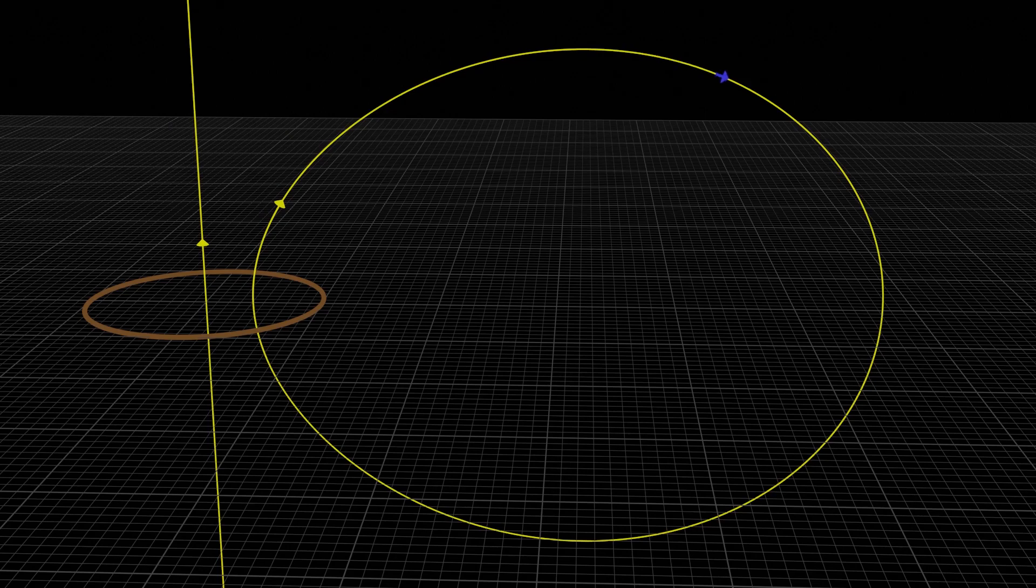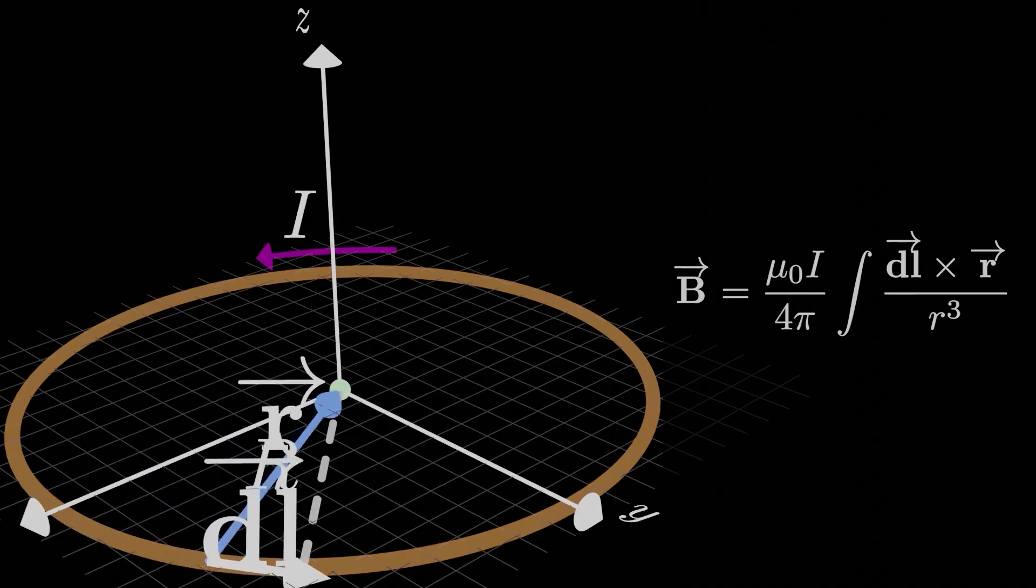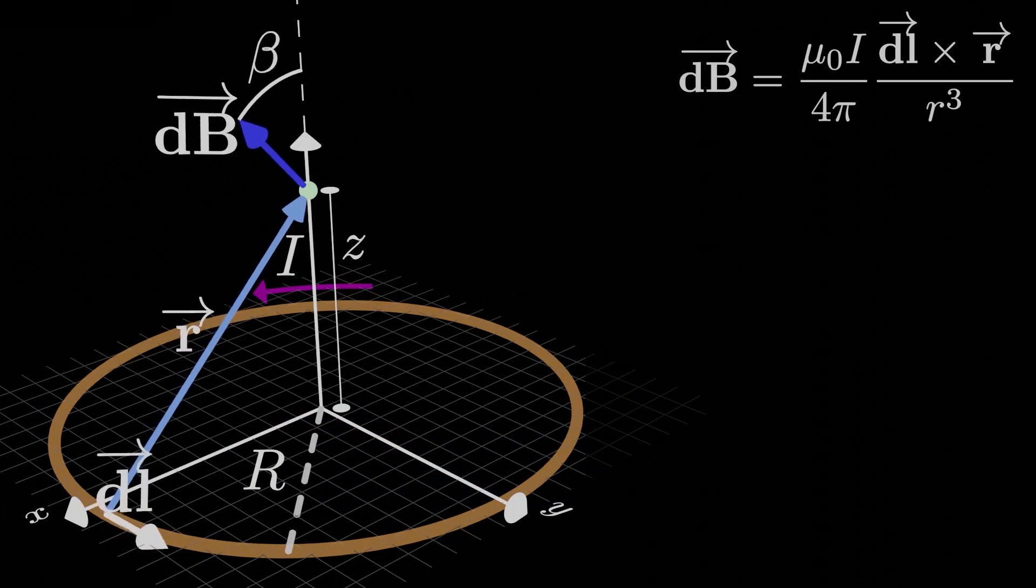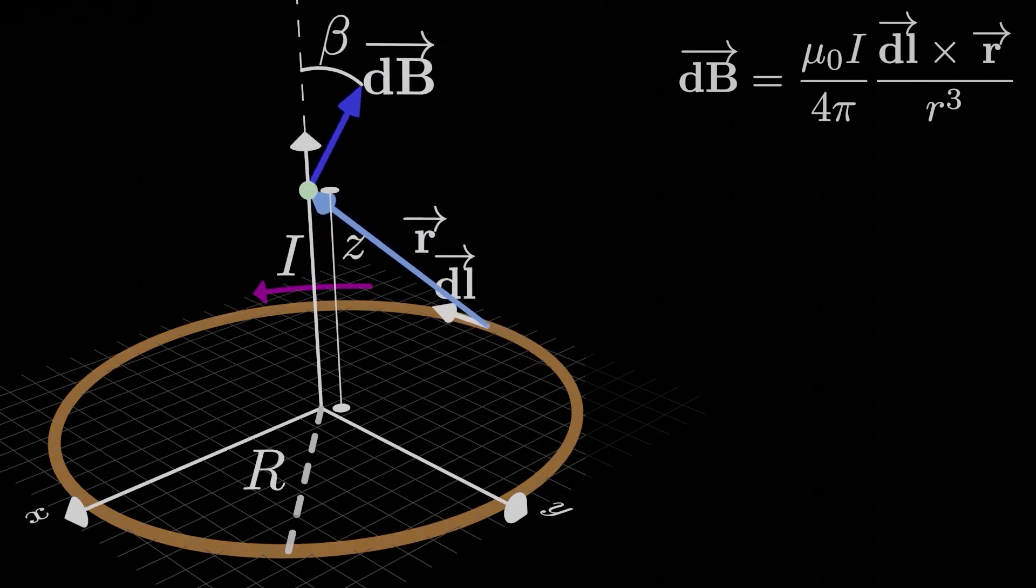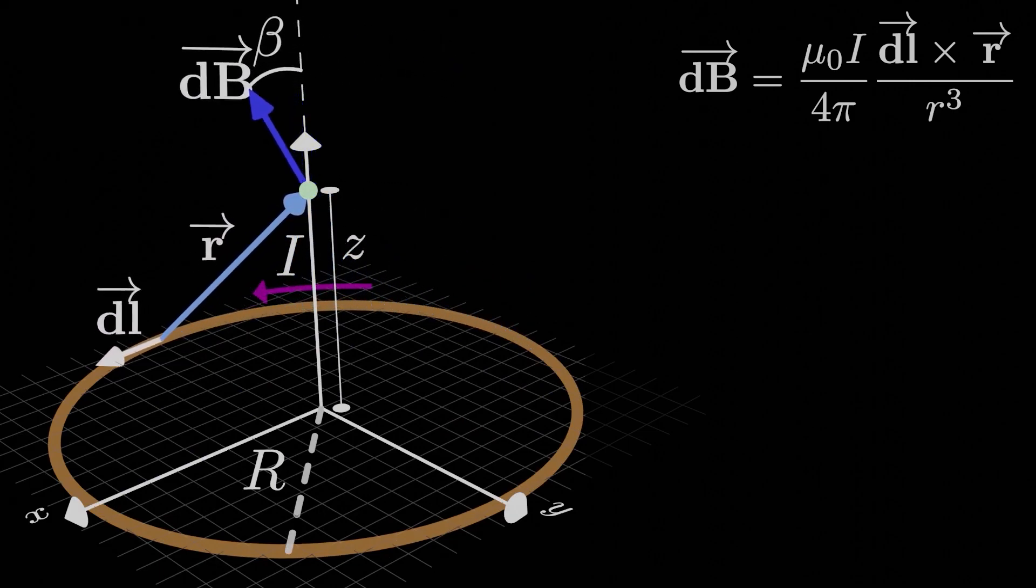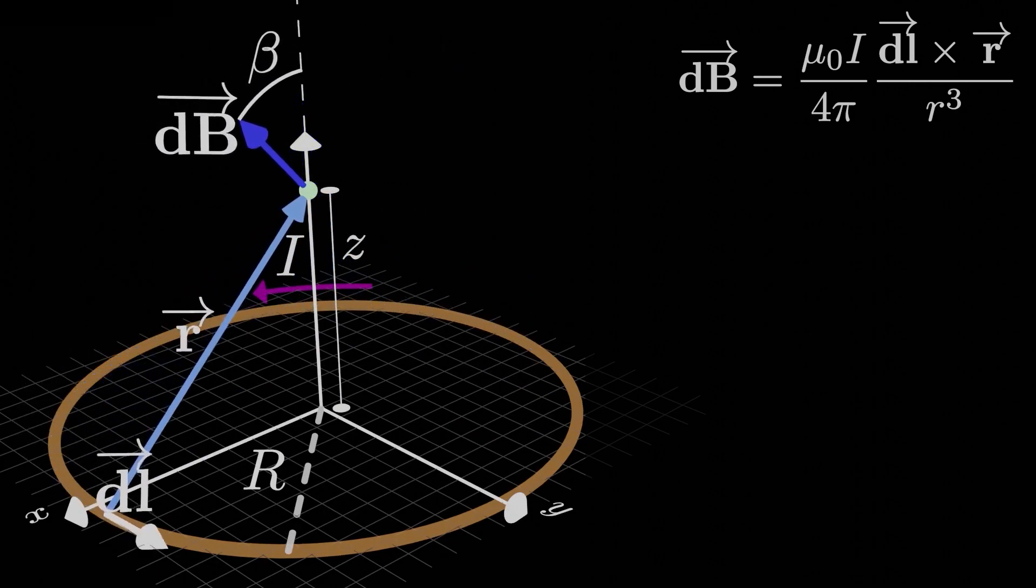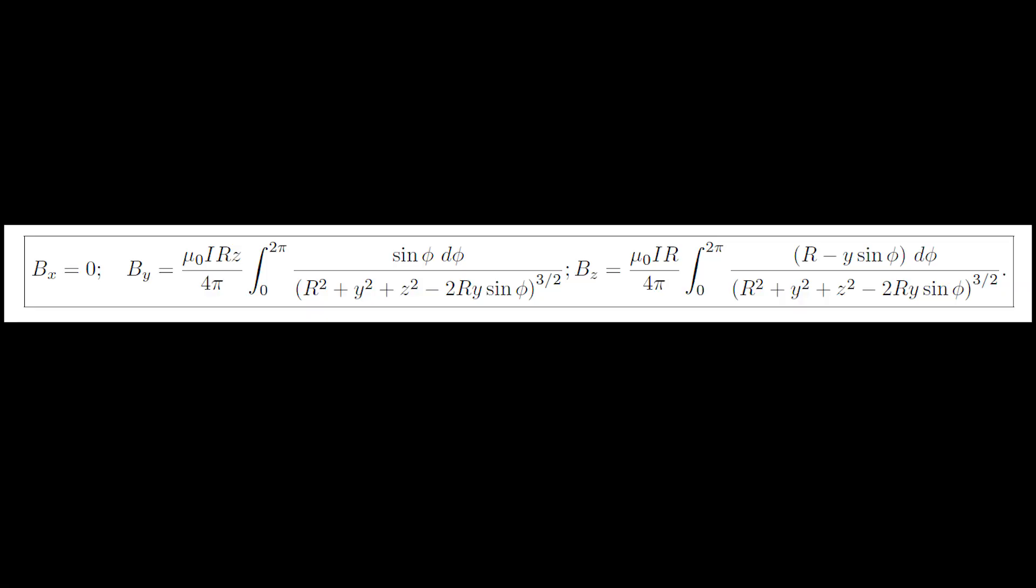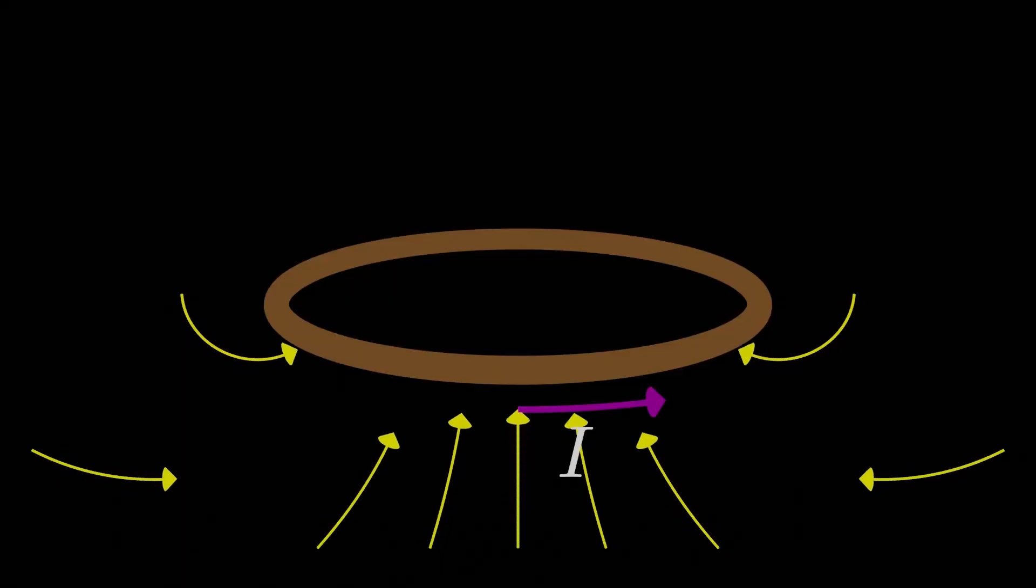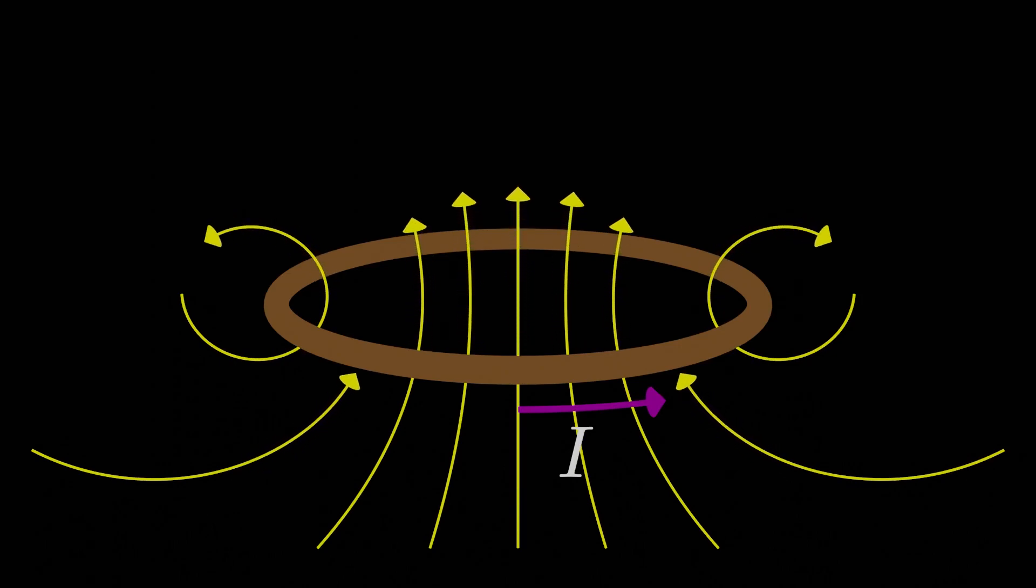But actually, even the Biot-Savart law leads us into some trouble. We found the magnetic field at the very center of the loop, as well as at any point on the axis of the loop in one of the exercises. However, that's about all we can do at this point. It is actually possible to find the magnetic field at any point in space generally, but the solutions involve these things called elliptic integrals, which are even beyond the scope of the calculus students. So, long story short, just take my word for it. This is what the magnetic field distribution looks like.